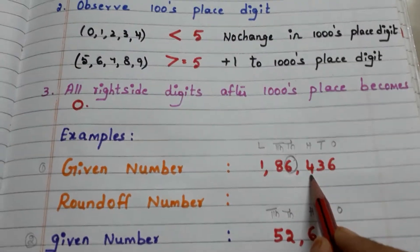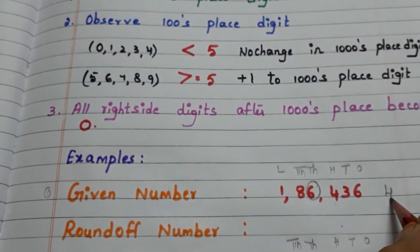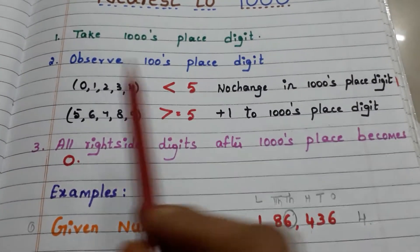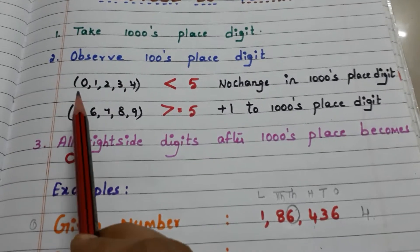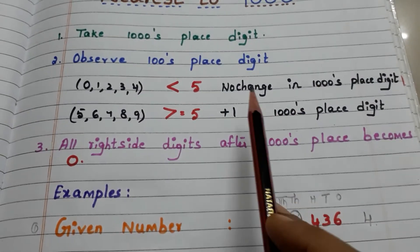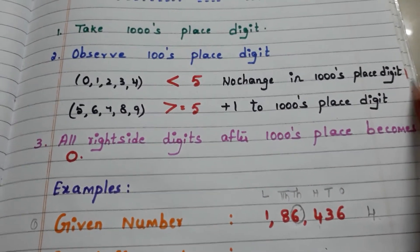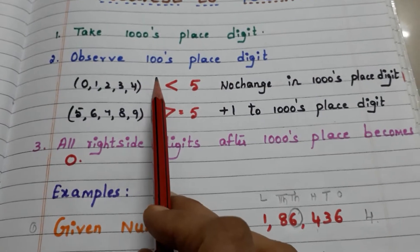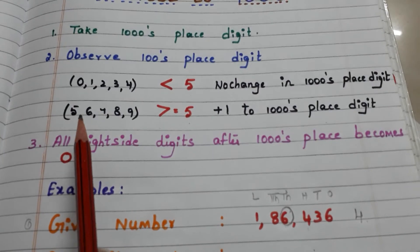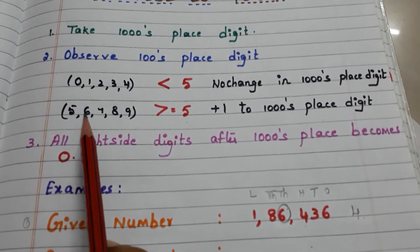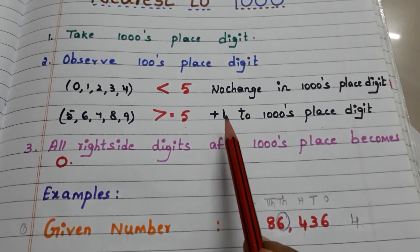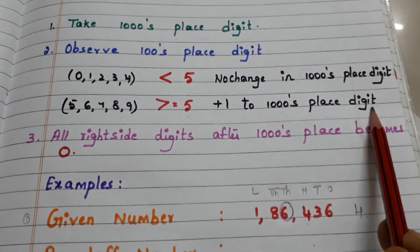Go to step two: observe the hundreds place digit. Here the hundreds place digit is four. If the hundreds place digit is less than five — meaning it is either 0, 1, 2, 3, or 4 — then there is no change in the thousands place digit. Or else, if the hundreds place digit is greater than or equal to five — meaning it is either 5, 6, 7, 8, or 9 — then we have to add one to the thousands place digit.